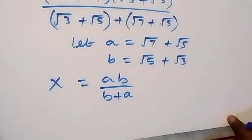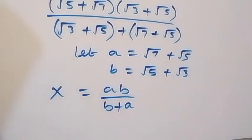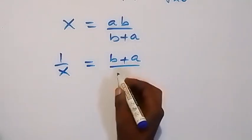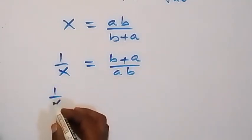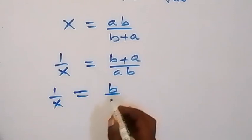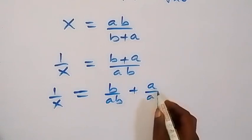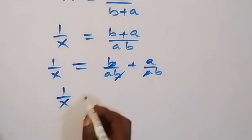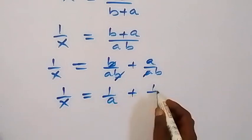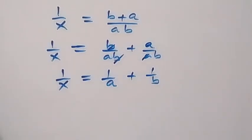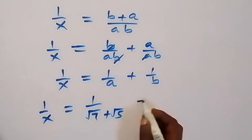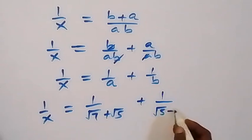From here we can take the reciprocal on both sides, and this will become 1 over x equals b plus a over ab. Then we can say 1 over x equals, when we separate this into two fractions, b over ab plus a over ab. This will reduce — b cancels and a cancels — so this reduces to 1 over x equals 1 over a plus 1 over b. From the value of a which is root 7 plus root 5, we have 1 over x equals 1 over (root 7 plus root 5) plus 1 over (root 5 plus root 3).